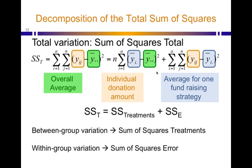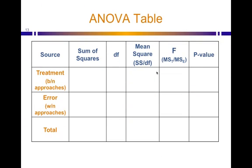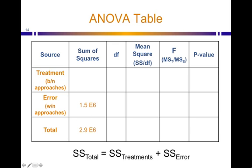Now let's look at how this comes together in the analysis of variance table. We're going to build this bit by bit. There are two bits of information we already know because we calculated them at the beginning of this example: the sum of squares within approaches and the total sum of squares. We can also calculate the sum of squares treatments — it's just the total minus sum of squares error, which equals 1.4 times 10 to the 6.